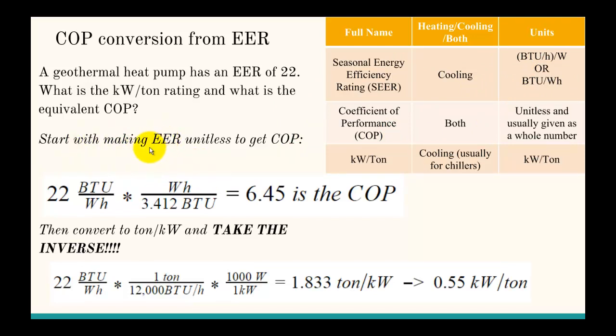We're going to start with making the EER unitless to get the COP. Basically we're trying to cancel out the BTUs and the watt hours. What's nice is we have our unit conversion that 3.412 BTUs equals one watt hour, and that cancels out the watt hours and the BTUs and makes it unitless. So we get that 6.45 is the COP.